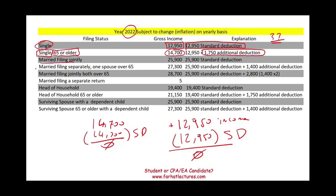Married filing jointly — they get a standard deduction of $25,900. So if you are married filing jointly, the amount is $25,900. If married filing jointly with one spouse over 65, you're going to get your standard deduction plus $1,400 — that's the additional standard deduction for age over 65. If both spouses are over 65, you get $25,900 plus $2,800 — $1,400 for each individual — for a total of $28,700.